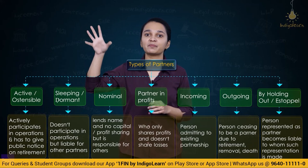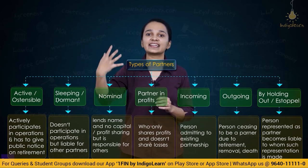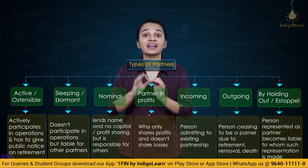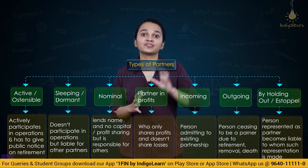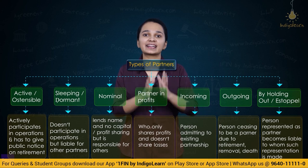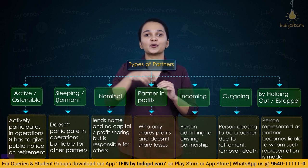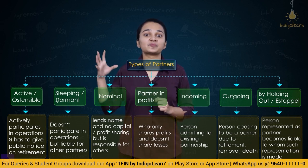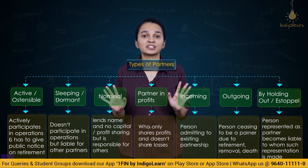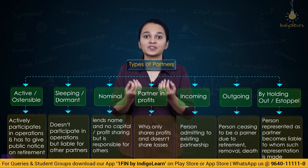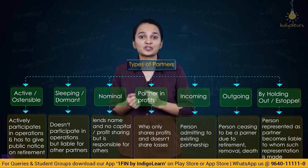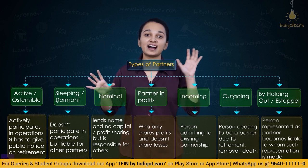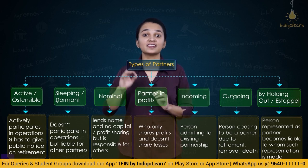We then discussed different types of partners. An active partner actively participates in the day-to-day management of the firm and must give public notice of retirement. A sleeping partner does not actively participate and is not known to outsiders. A nominal partner only lends his name to the firm — he has no interest in the business, does not share profits, but is liable to third parties because they approach the firm on the basis of his name.